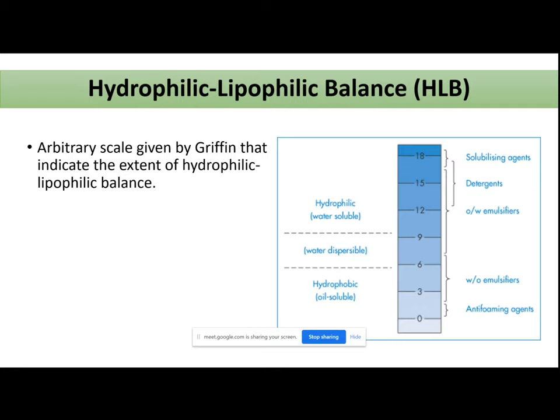To solve that issue, so that you can easily select your surfactant of interest from that pool of available options, an arbitrary scale was given by Griffin — a scientist named Griffin — who gave an arbitrary scale.